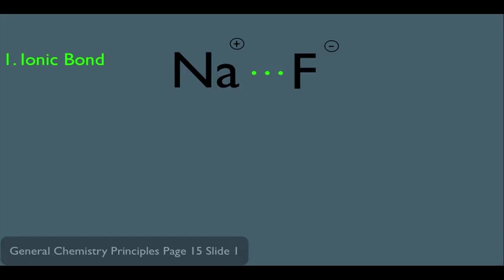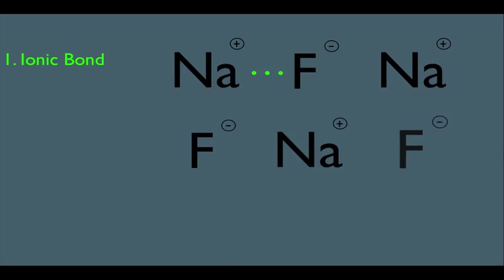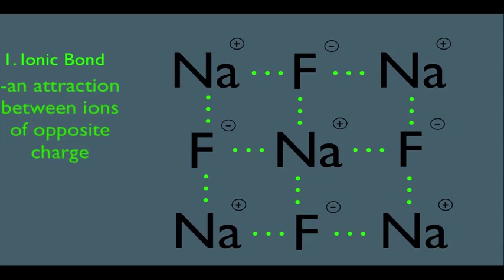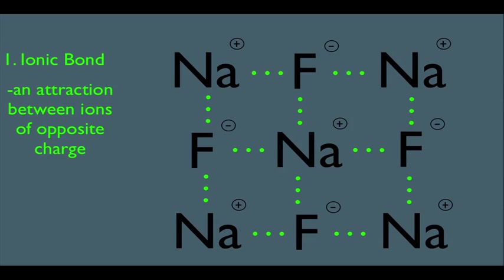The type of this bond is an ionic bond. If you had a whole bunch of sodium fluoride, you'd have a bunch of them all connected and attracted to each other via ionic bonds. So what's an ionic bond? It's simply an attraction between ions of opposite charge, and it usually occurs between a metal and a non-metal.